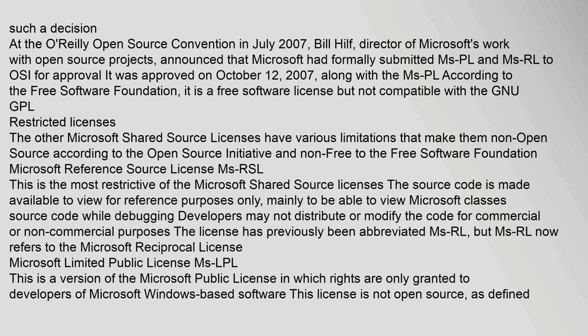At the O'Reilly Open Source Convention in July 2007, Bill Hilf, director of Microsoft's work with open source projects, announced that Microsoft had formally submitted MsPL and MsRL to the OSI for approval. It was approved on October 12, 2007, along with the MsPL. According to the Free Software Foundation, it is a free software license but not compatible with the new GPL.